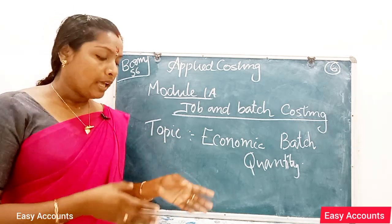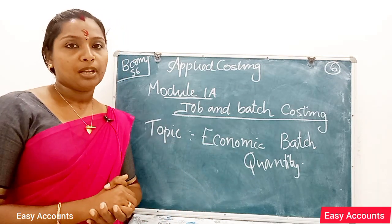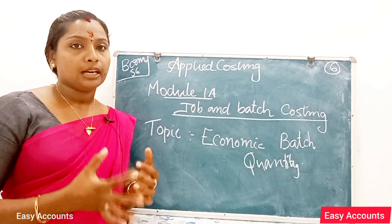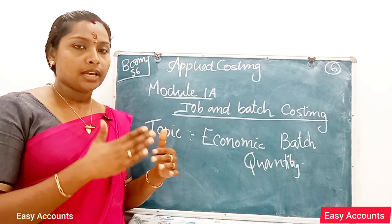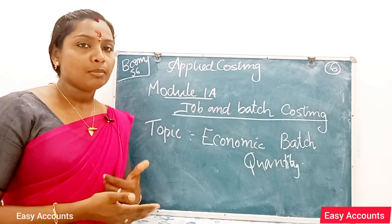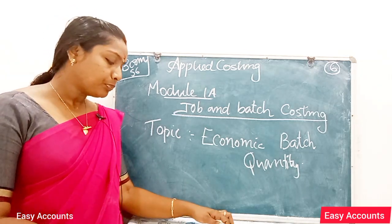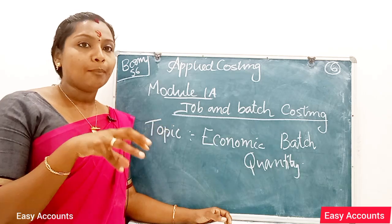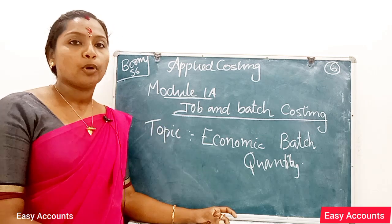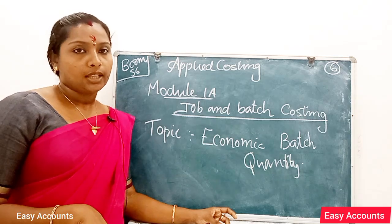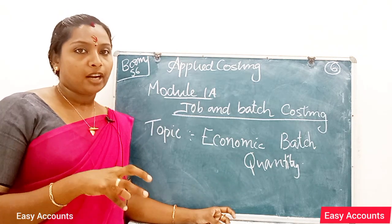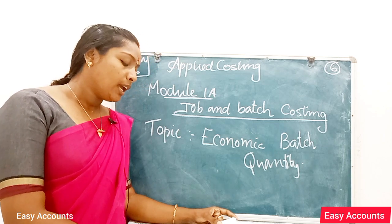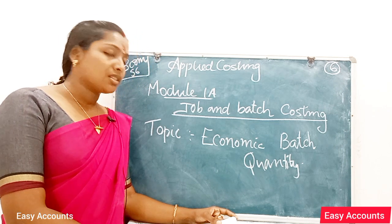Let's talk about the economic order — we calculate the economic batch quantity. It is the quantity or number of units to be produced in a particular batch or load in order to be most economical, or to be at the lowest cost per unit.